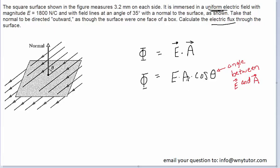A is going to represent the area of this surface here. The question notes that the surface is a square, and the area of a square is simply the length of the square multiplied by the width of the square.